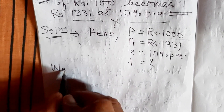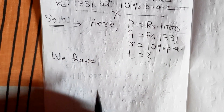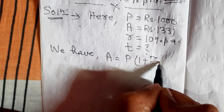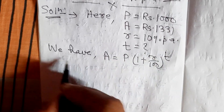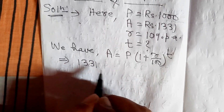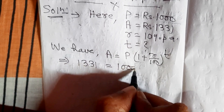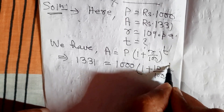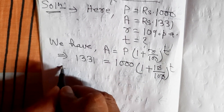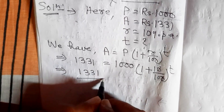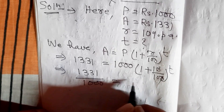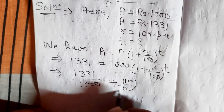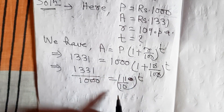So we have the formula: A is equal to P into 1 plus R by 100 exponent T. Putting values: 1331 is equal to 1000 into 1 plus R by 100 exponent T. Dividing by 1000 we get 1331 divided by 1000 is equal to 1 plus 1 by 10, that is 11 by 10, whole exponent T.